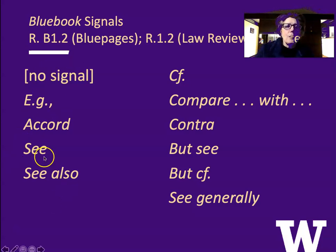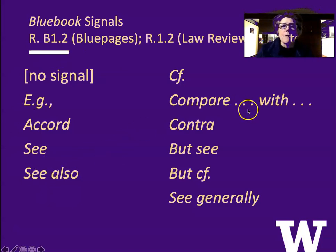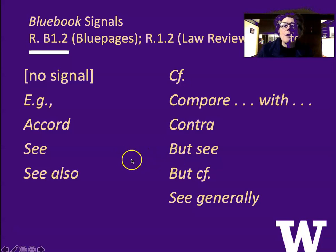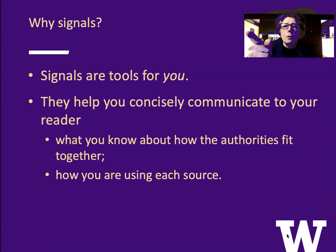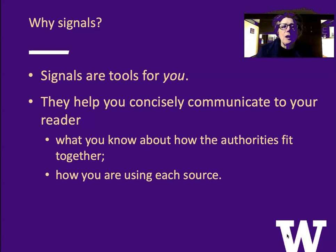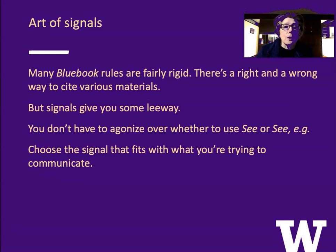Some signals show positive support — here is something that supports my proposition. Some invite a comparison, and some say here's something that goes against my proposition. Why do we use signals? Signals are tools for you. They help you concisely communicate to your reader what you know about how the authorities fit together and how you are using each source.